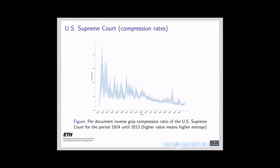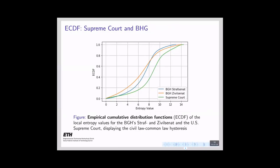We plotted compression rates for the U.S. Supreme Court over the time period from 1924 to 2013, and we see that tendentially it starts to decrease, meaning it becomes more structured over time. Our hypothesis is that this is based on an increasing use of statutes in the U.S. Supreme Court system and an increased formalized way of writing the rulings. To compare the Bundesgerichtshof and the Supreme Court, we calculated empirical cumulative distribution functions for local entropy values.